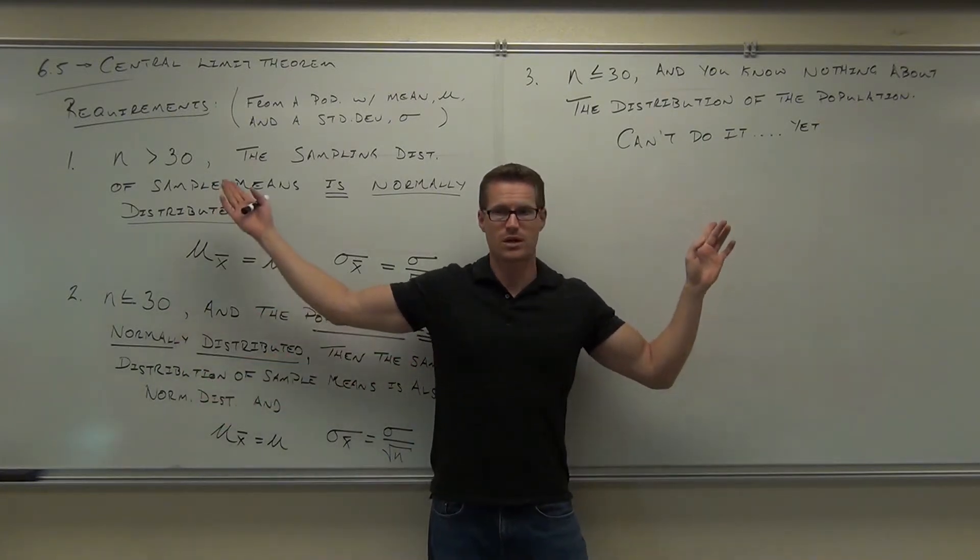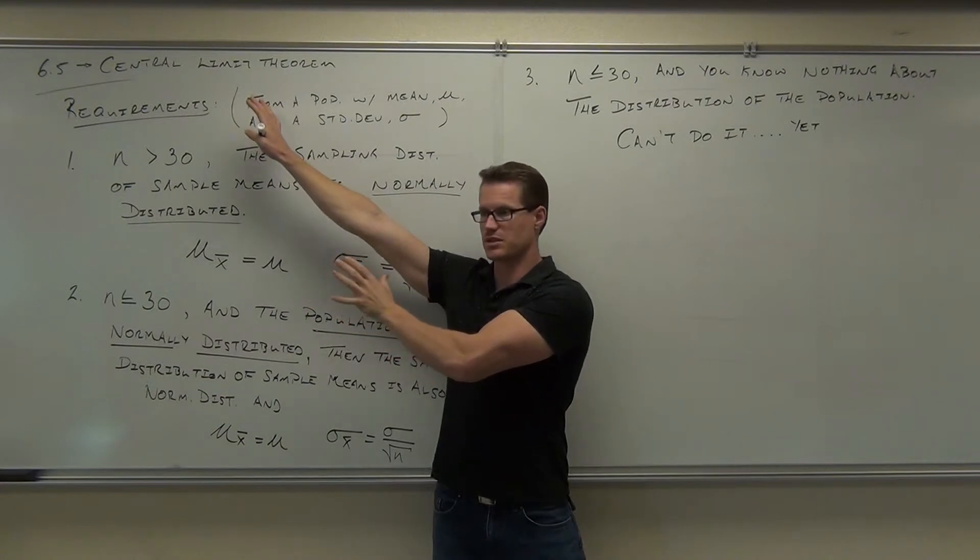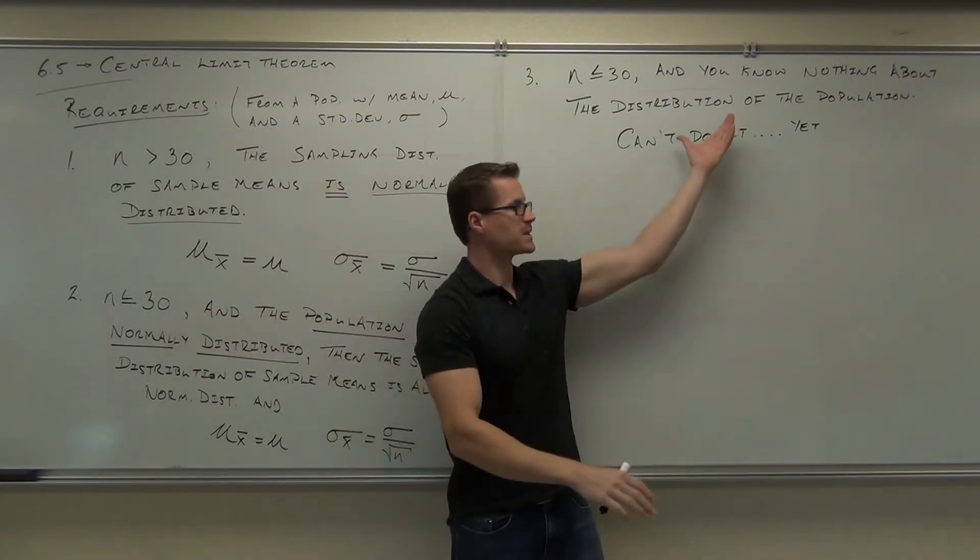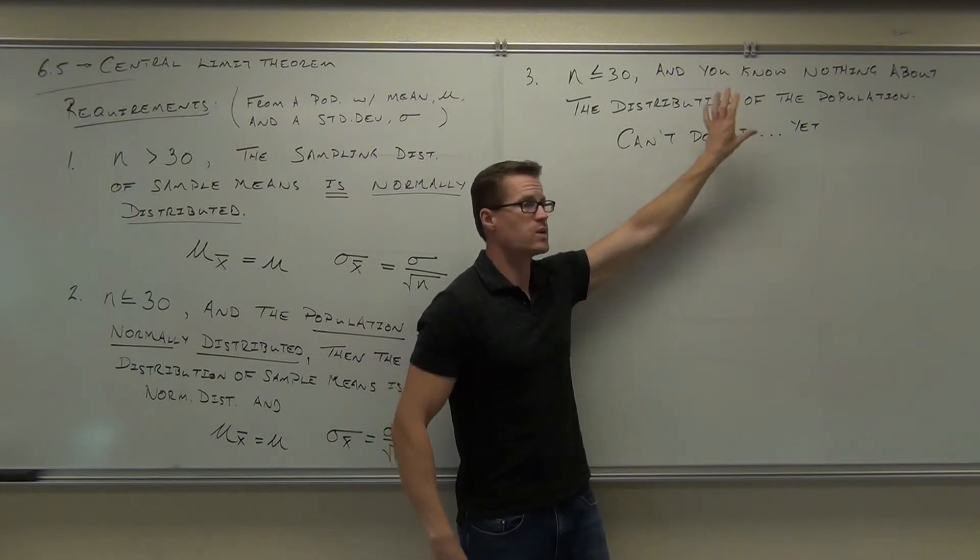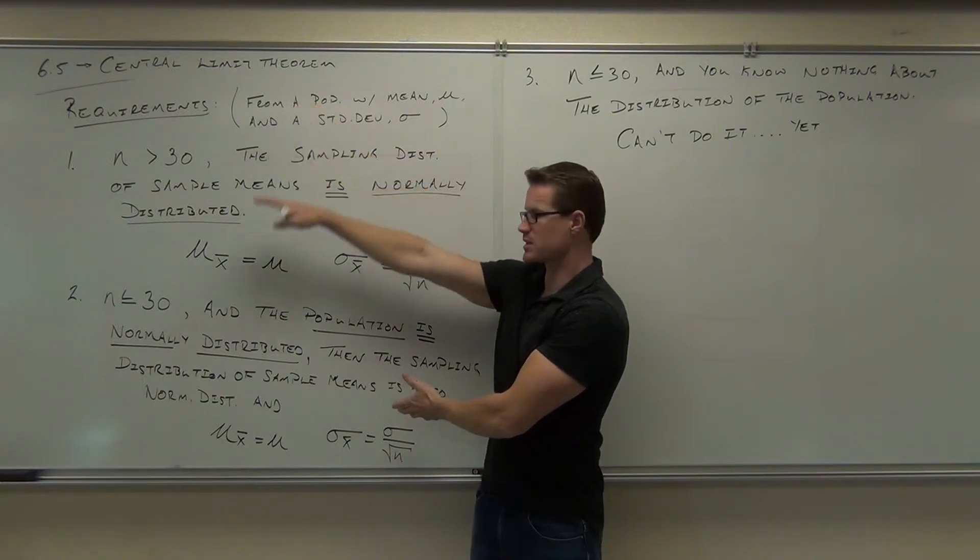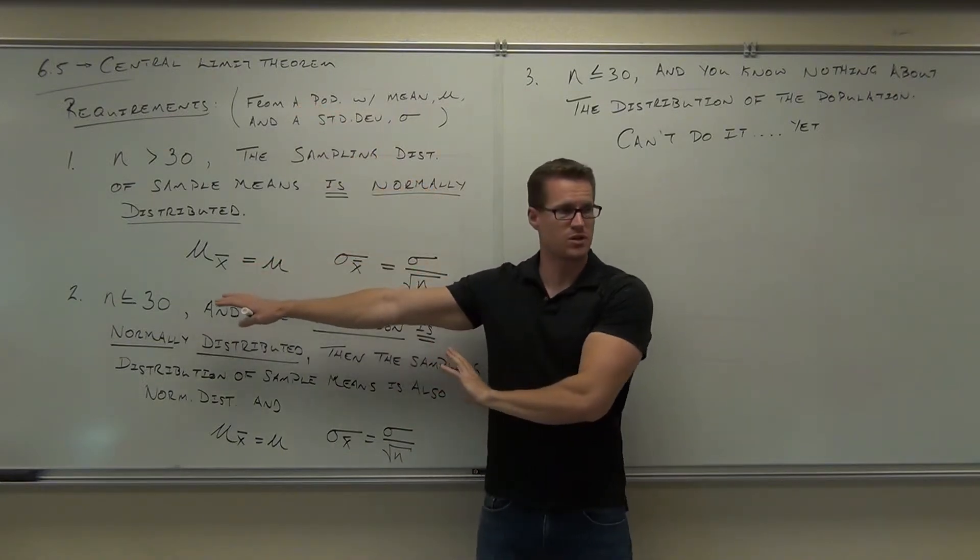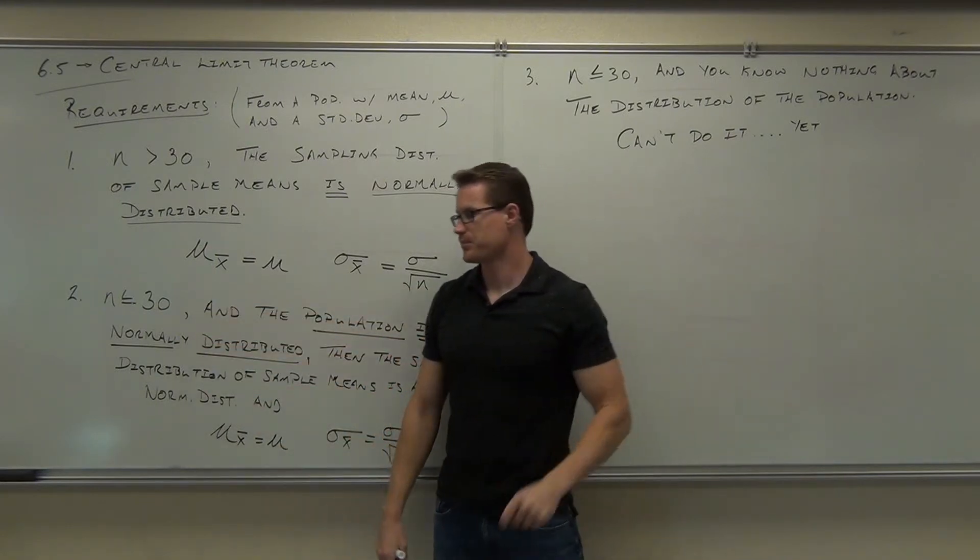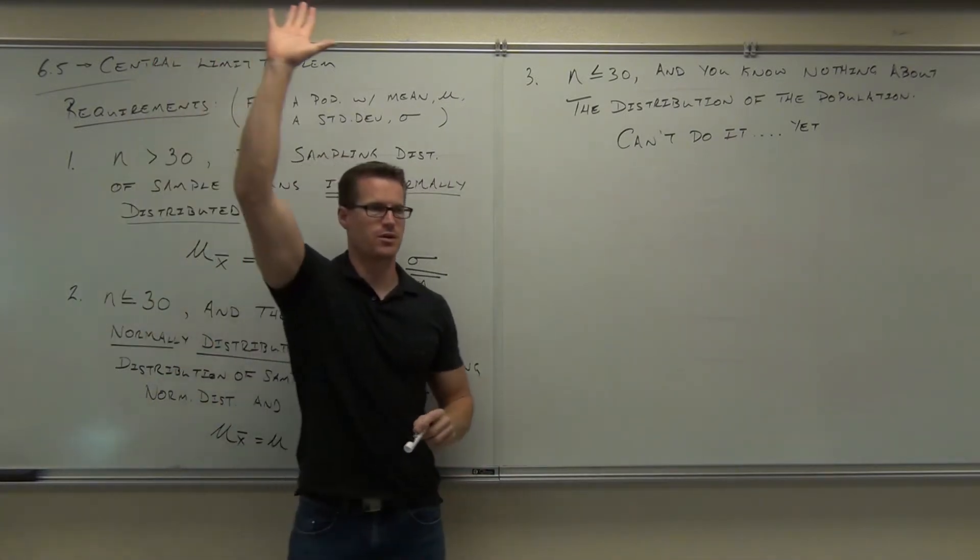If n's greater than 30, you use this stuff. This is great. If n's less than or equal to 30, you have to choose between these. Right now, you can't even do this one. So right now, you live in these two worlds. n's greater than 30, great. n's less than or equal to 30, check the distribution. If it's normal for the population, okay. If it's not, you can't do it right now.